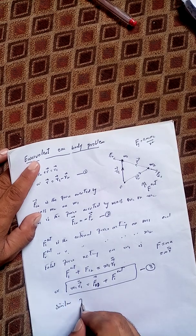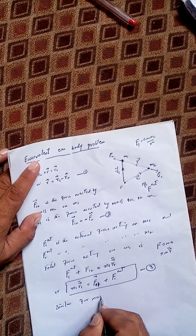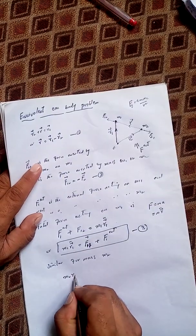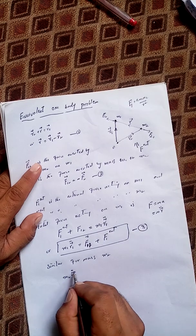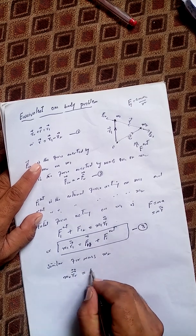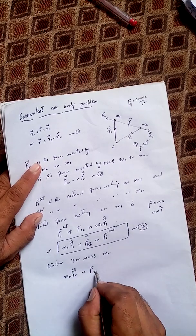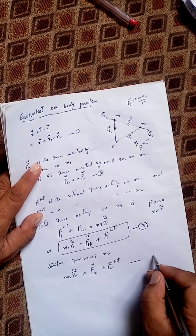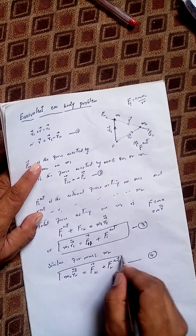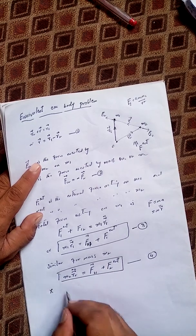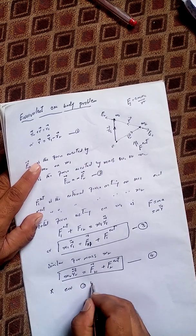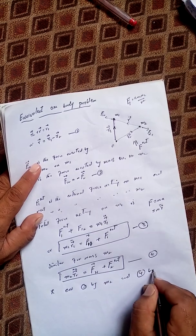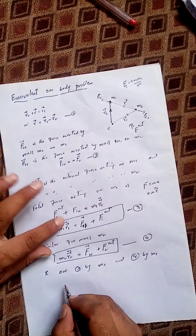Similarly for mass m2, the total forces give equation 4: m2 r2 double dot equals F21 plus F2_external. Now multiply equation 3 by m2 and equation 4 by m1.